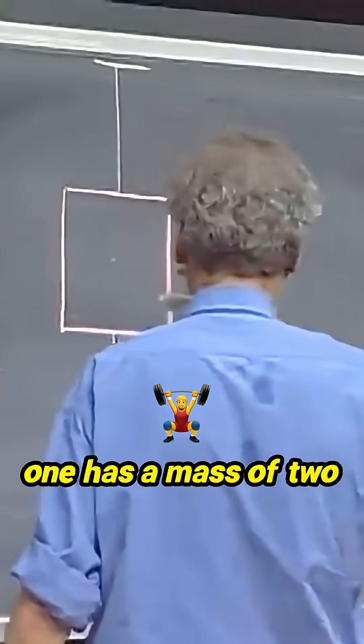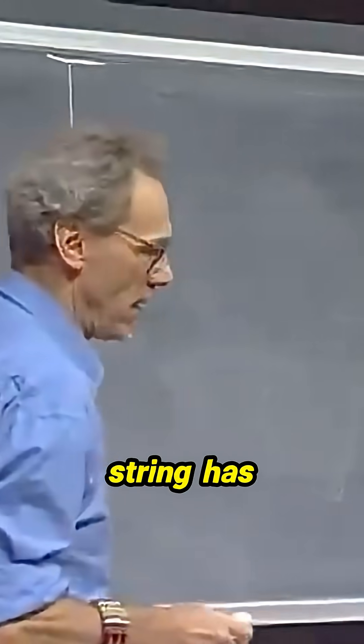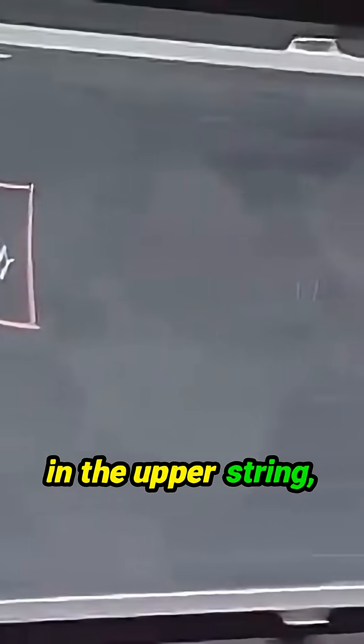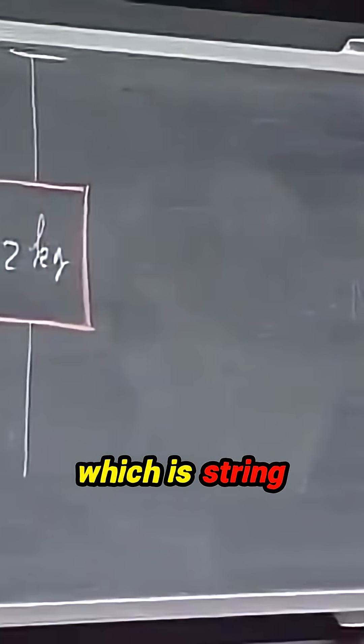T1 has a mass of two kilograms, and this string has no mass. This is two kilograms. So what will be the tension in the upper string, which is string number one?